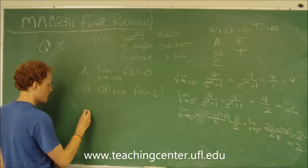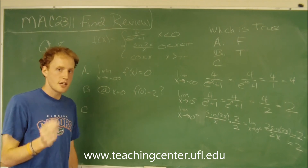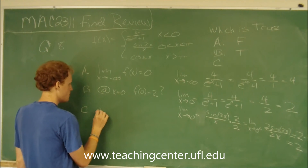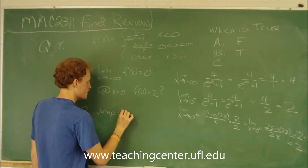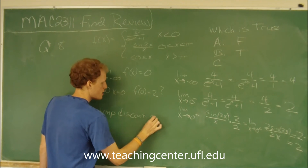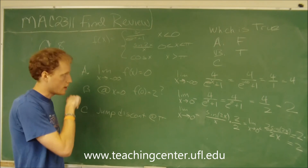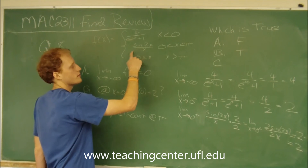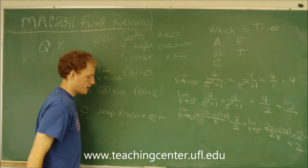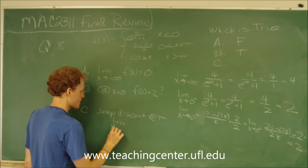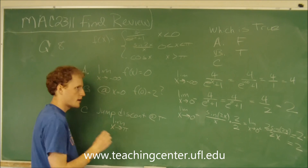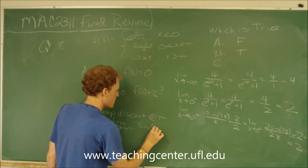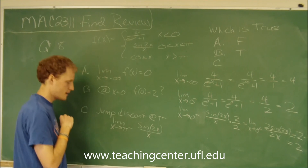For C, it wants to know if there's a jump discontinuity at pi. So let's look at the limits for pi. We have to use the second function from the left and the third function from the right. The limit as x goes to pi from the left is the sine of 2x over x.